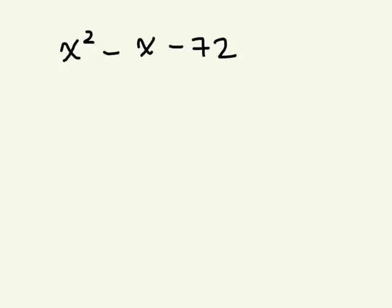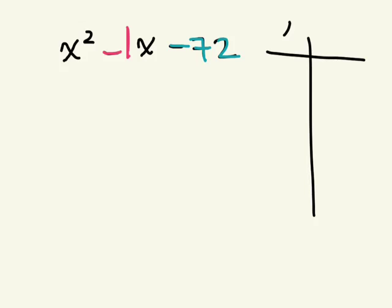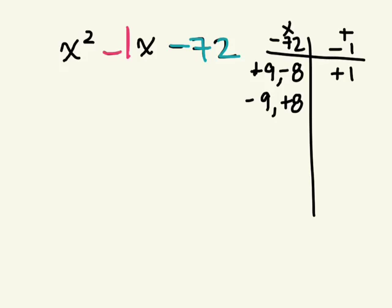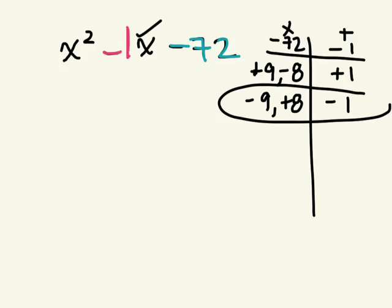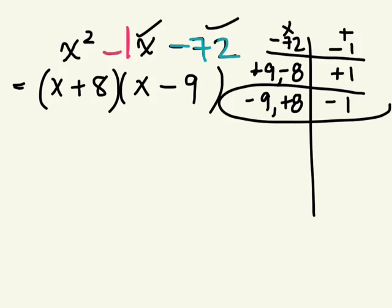Whenever we don't see a number there, we imagine there's a 1. So B is negative 1 and C is negative 72. We're looking for two numbers that multiply to give us negative 72 and add up to negative 1. Negative 9 and positive 8: negative 9 plus 8 equals negative 1. That's it. So factored form is X minus 9 and X plus 8 — or X plus 8 minus 9.